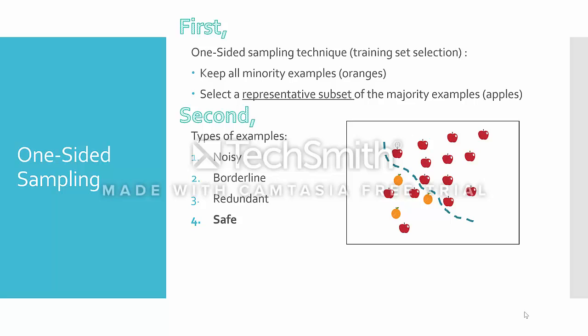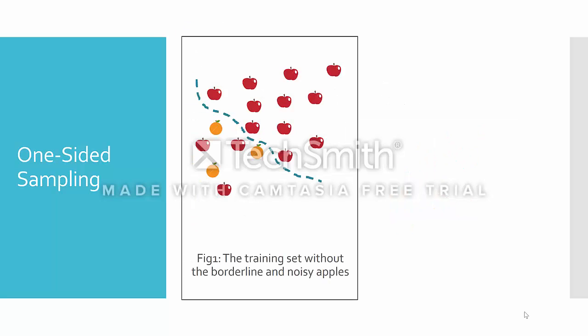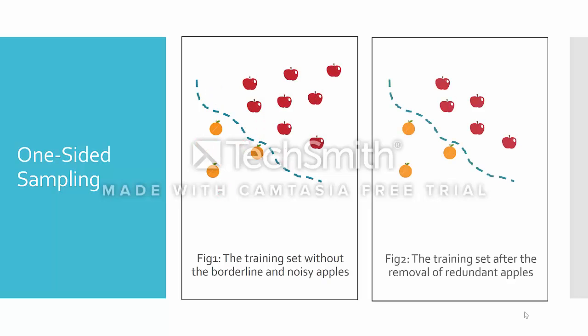The types that can make it to the representative subset of the majority examples would be the safe ones. Figure 1 shows what happens to our example when all the borderline and noisy examples are removed. Figure 2 illustrates a further reduction where redundant examples are removed. If we use the Figure 2 examples to induce a classifier using nearest neighbor or a decision tree, none of the problems discussed before should occur.